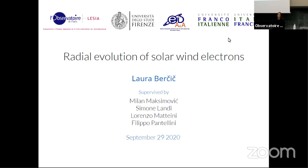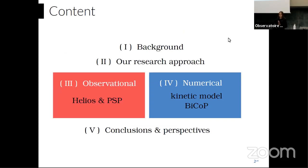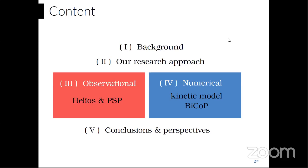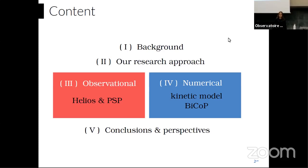Today I will be talking about my thesis project on the radial evolution of solar wind electrons, done in cooperation between the University of Florence and LESIA of the Paris Observatory, under the supervision of Milan Maksimovic, Simone Landi, Ferenczi, Matteini, and Filippo Pantellini. The presentation covers background, open questions, observational results from Helios and Parker Solar Probe data, numerical kinetic model results, conclusions, and future work.